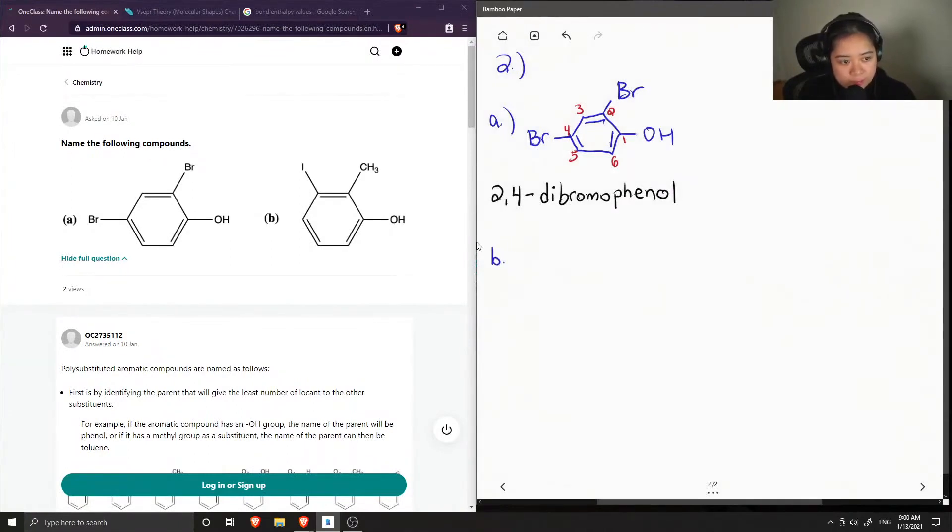So now we can do a similar approach to our second compound. Now let's number again. And we also go counterclockwise since the methyl group and this iodine group are right beside the alcohol group. Okay, so again,